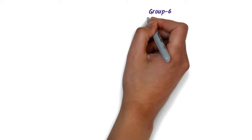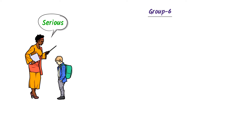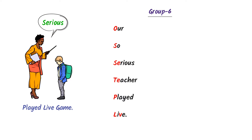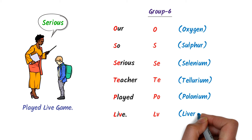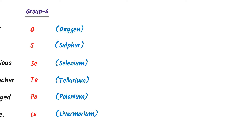Sixthly, consider your serious teacher in the school. Remember his name and his face — that he played a live game with you. I say: our so serious teacher played live. Here, O stands for Oxygen, S stands for Sulphur, this S stands for Selenium, T stands for Tellurium, P stands for Po — Polonium, L and V stands for Lv — Livermorium. Thus this is the sixth group of the periodic table.